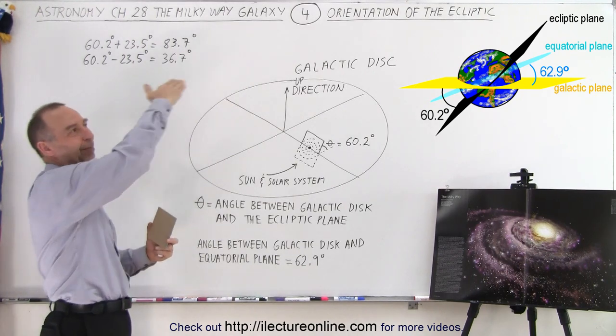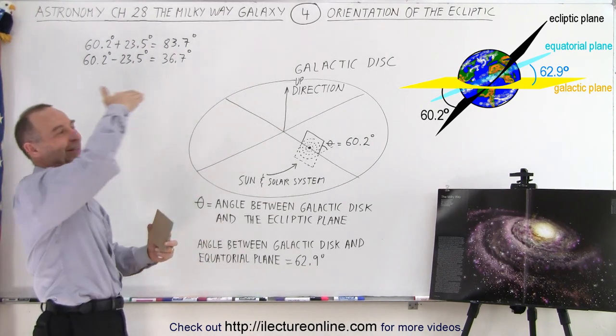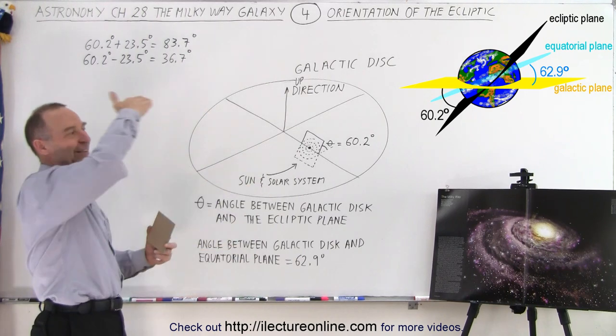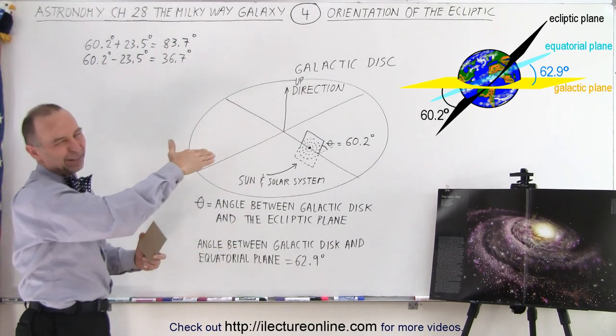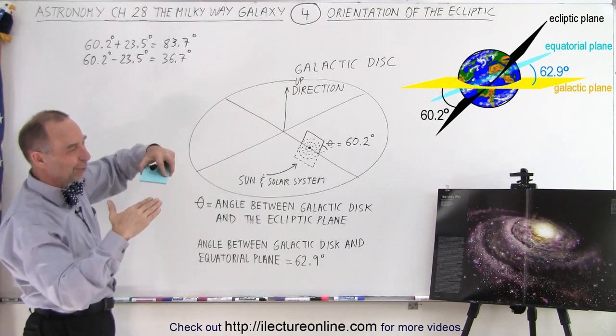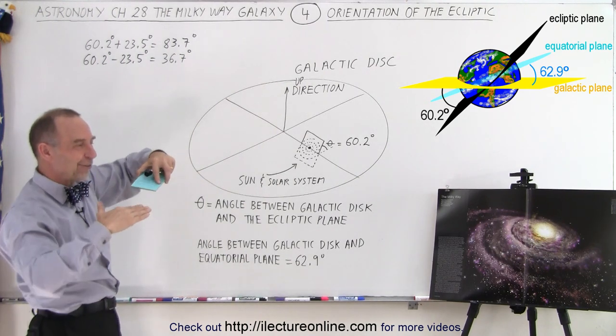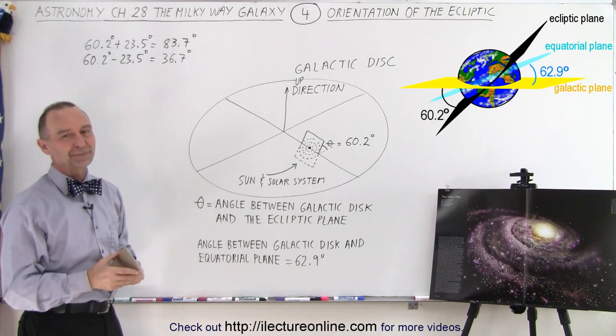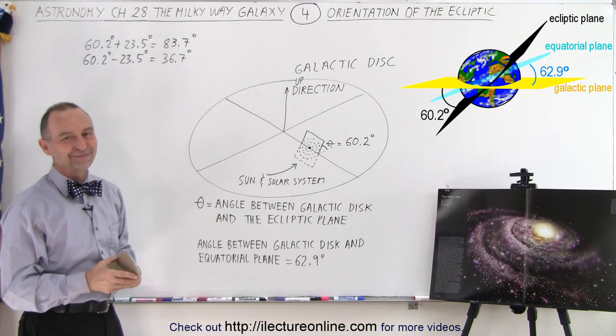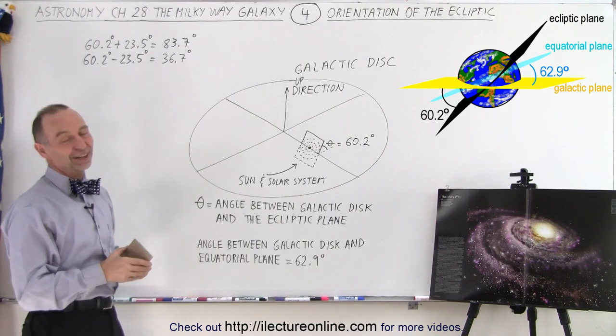And then you have the ecliptic plane where all the planets and the Earth go around the sun. So you want to get a feel of which direction to look for certain places relative to those planes. So it only matters to us. Only matters to us. No one else cares.